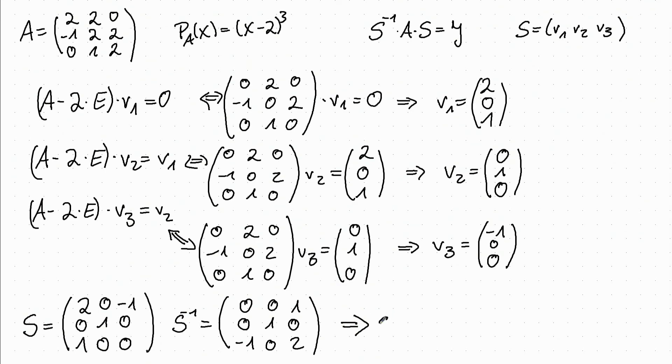And now we have that S to the minus 1 times A times S is in Jordan form. Namely since it's only one Jordan block, remember that we only had one vector in the eigenspace, the Jordan form looks like this. It consists of only one block.